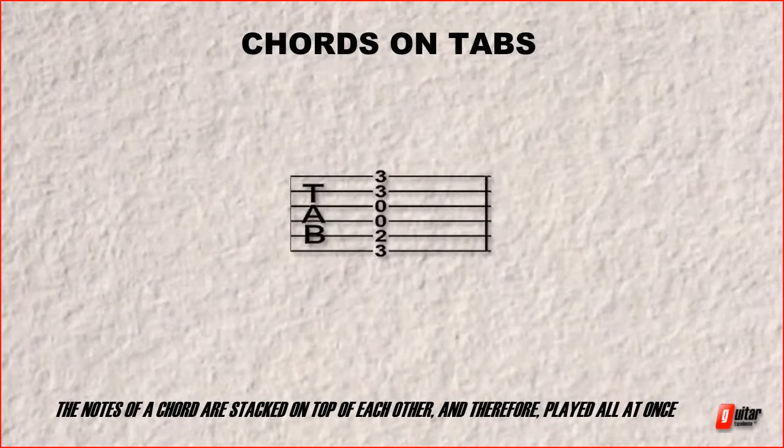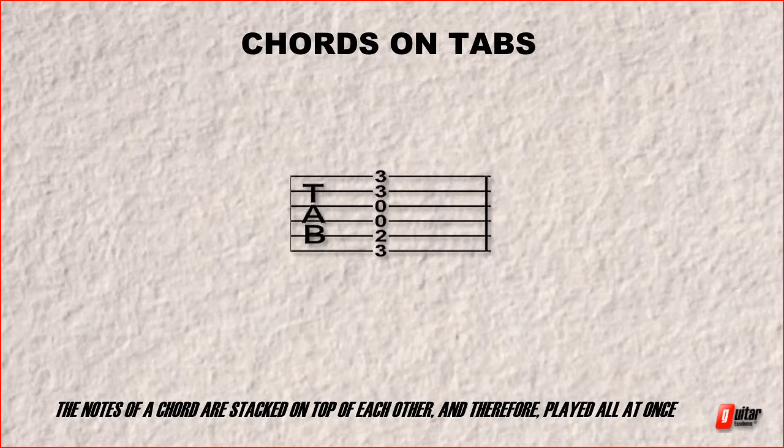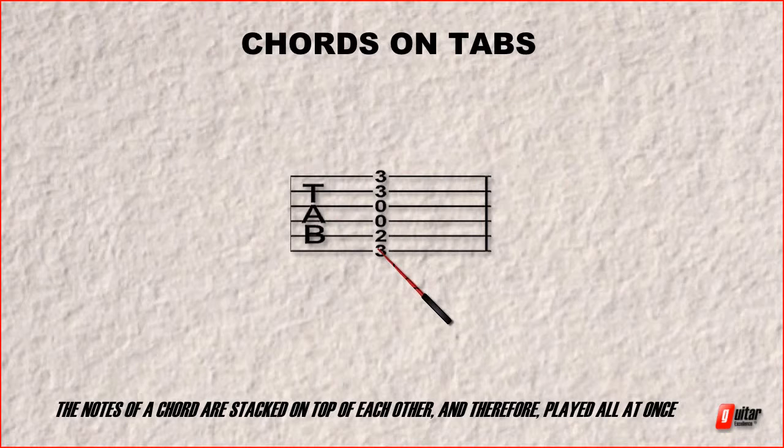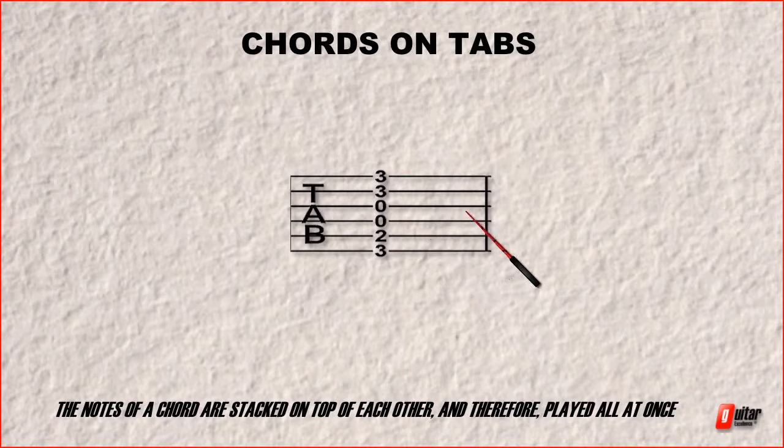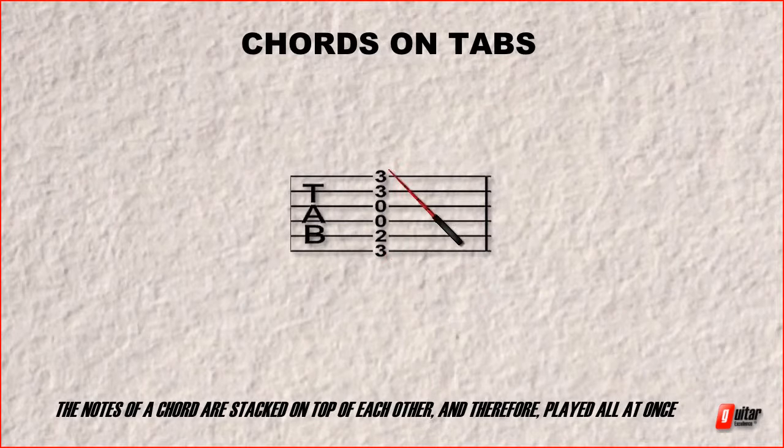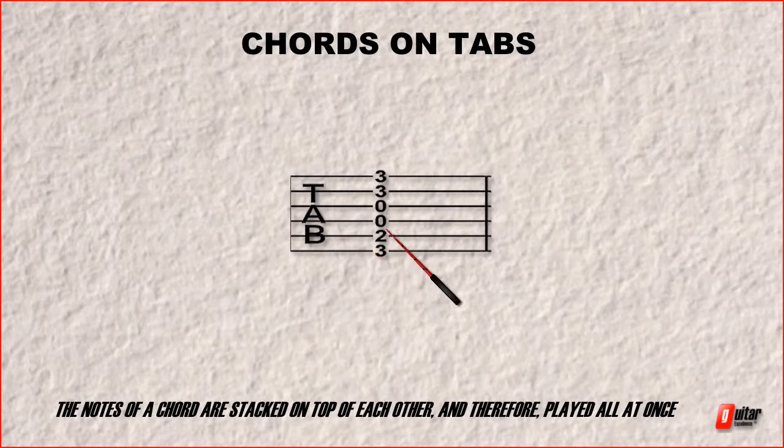Okay, here we have another example of a tab. Now the first thing you'll notice is that all these notes are now stacked on top of each other. As opposed to the previous examples where the numbers went from left to right. Now this simply means that we're going to play all of these notes at the same time. So this is what a chord looks like when it's tabbed.